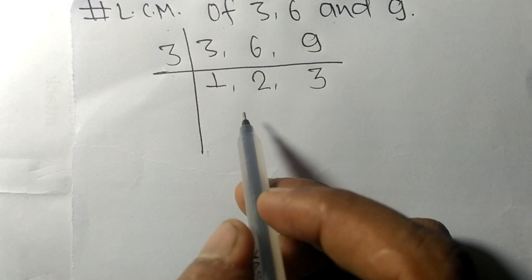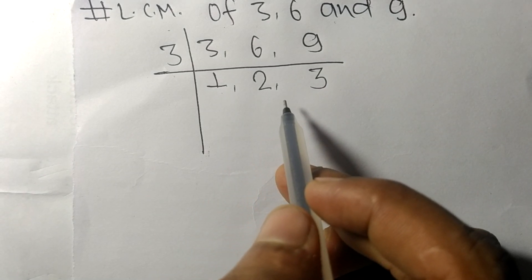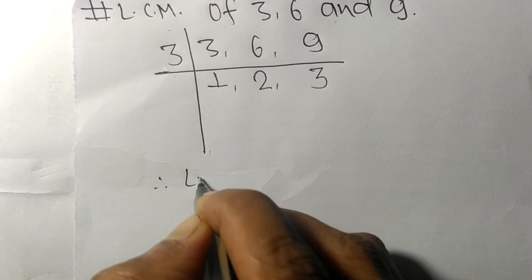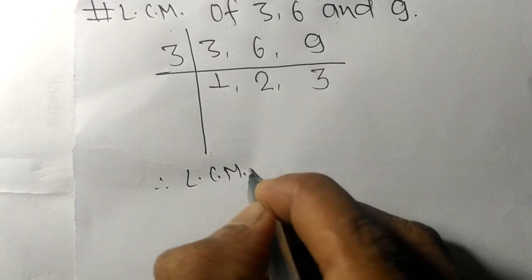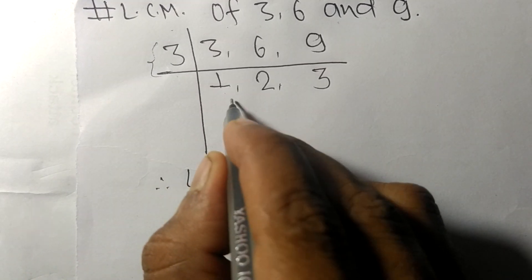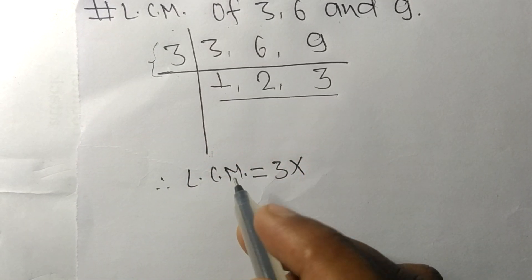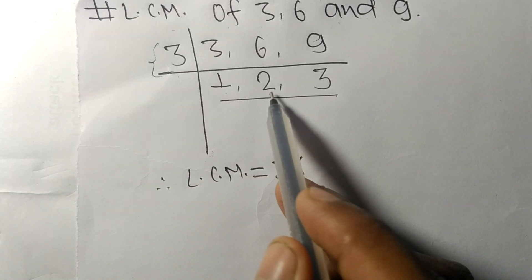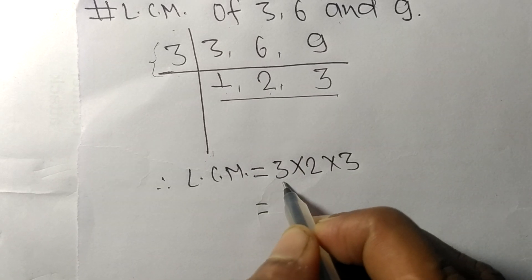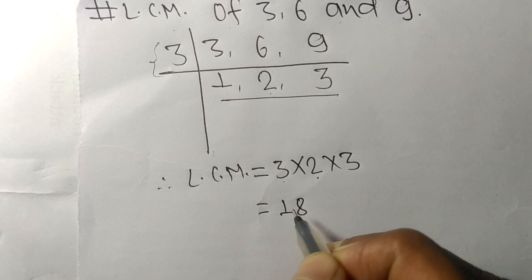So now we got 1, 2, and 3 which are not exactly divisible by the same number. Therefore its LCM is equal to, from this side it is 3, from this side we choose the numbers greater than 1, that is 2 and 3. So 2 and 3: 3 times 2 equals 6, 6 times 3 equals 18.